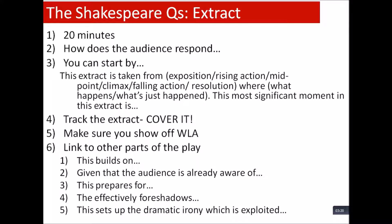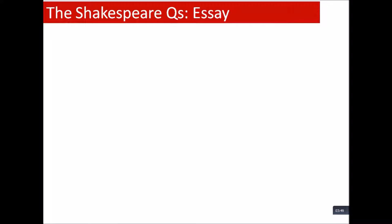Another useful phrase is: 'this sets up the dramatic irony which is exploited...' For example, Act 1 Scene 1 of Othello sets up the dramatic irony that Iago is working against him, which is then exploited in the very next scene when Iago is being beautifully dutiful to Othello. You would write that if you had the extract showing him being dutiful. For Romeo and Juliet, the prologue is always useful.